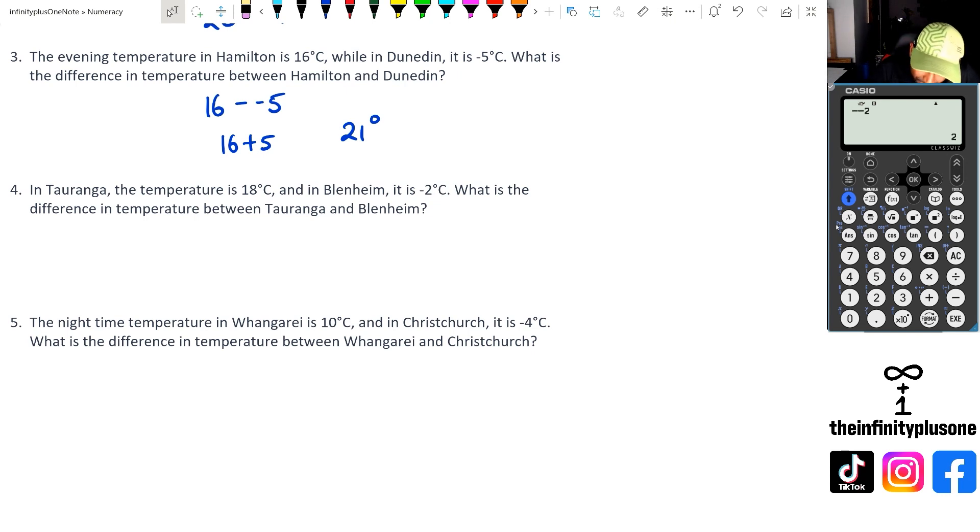Let's have a look at this. Tauranga, 18 degrees. And we've got Blenheim, which is minus 2 degrees. So we're going to go 18 take away negative 2. And again, the reason we're doing minus is because of this particular word, we're looking for the difference in temperature between these two towns. So we've got 18 take away negative 2, which is the same thing as saying 18 plus 2. So we're going to get 20 degrees.